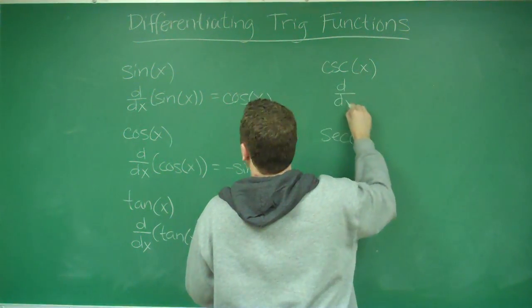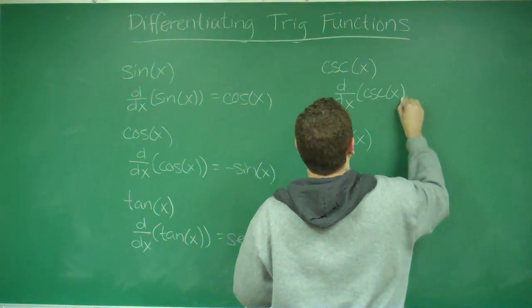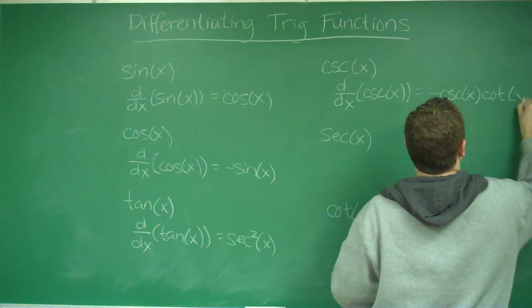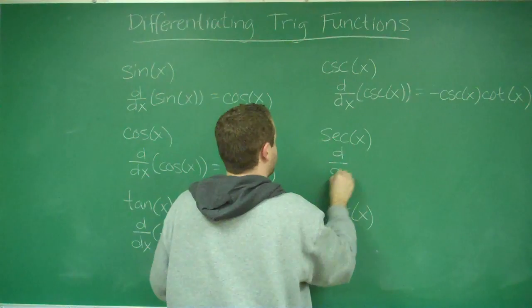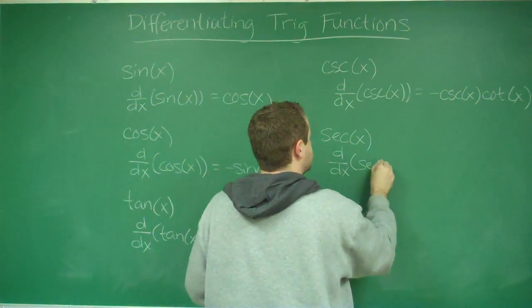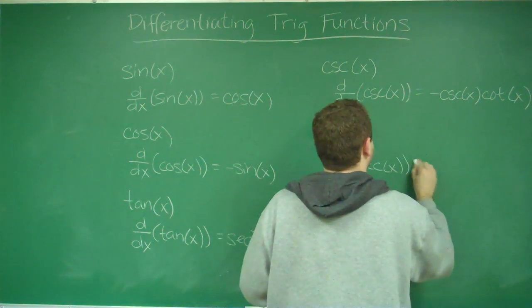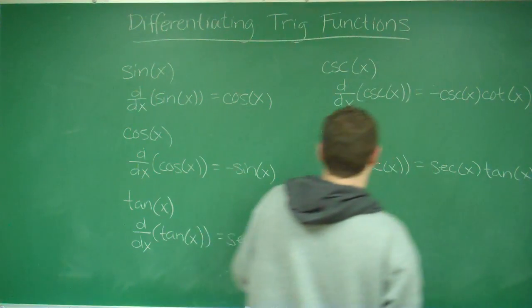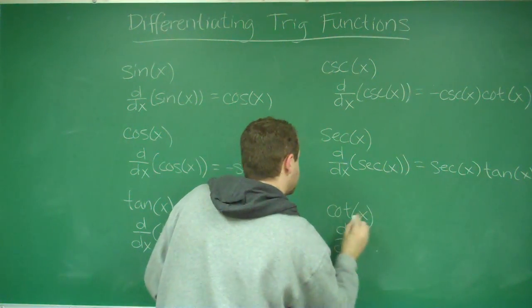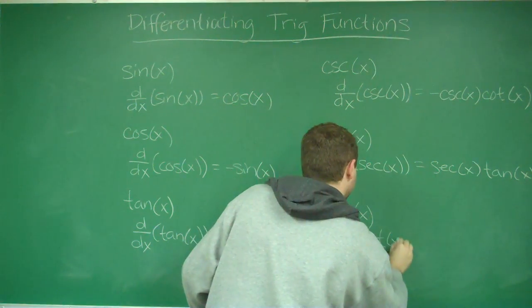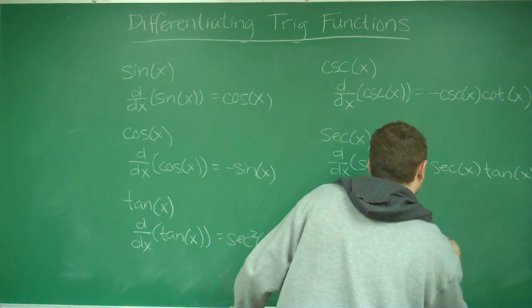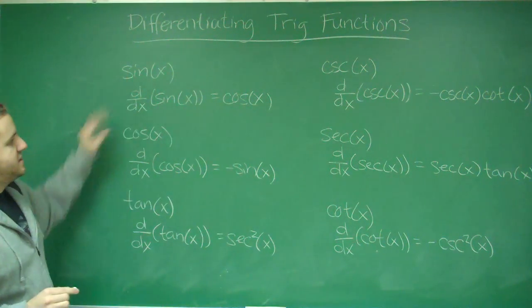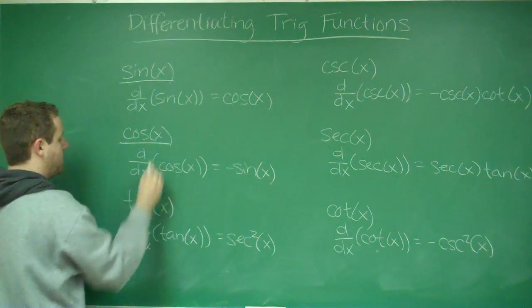The derivative of cosecant x is negative cosecant x cotangent x. The derivative of cotangent x is negative cosecant squared of x. So these are the six trig functions and their derivatives.